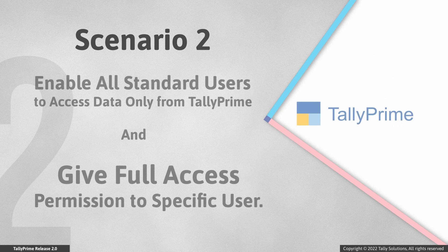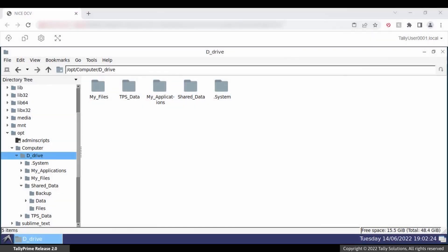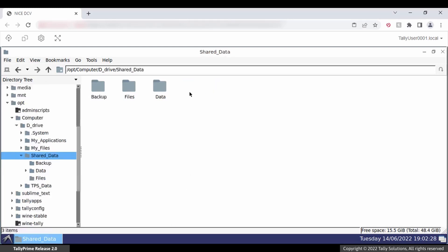Let us now look at another scenario where the admin or owner wants all users to access data only from Tally Prime, but wants to give a specific user full permission — that is, access to files and folders from Tally Prime, File Explorer, and other applications in the virtual computer. In the virtual computer of the owner, go to the folder you want and set user control.